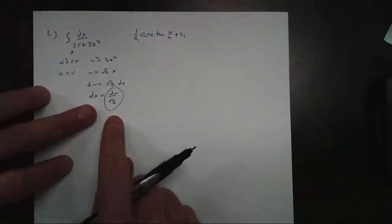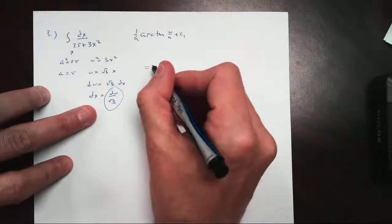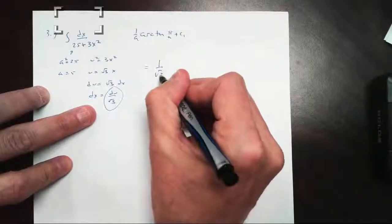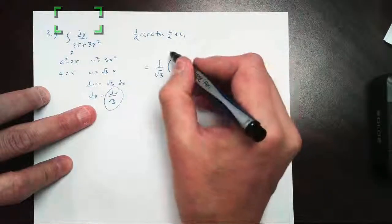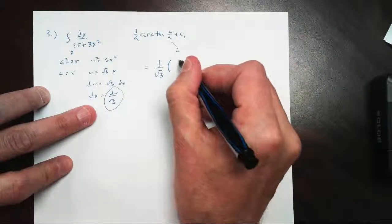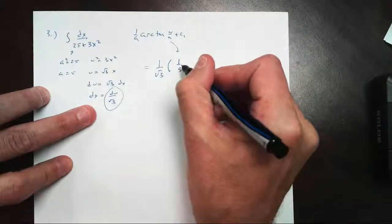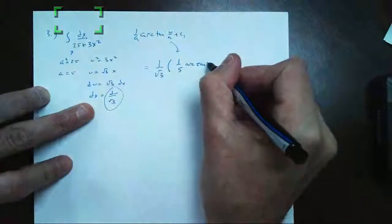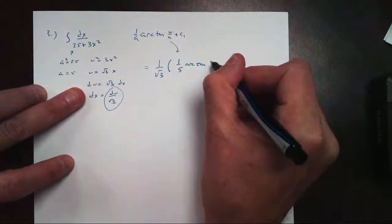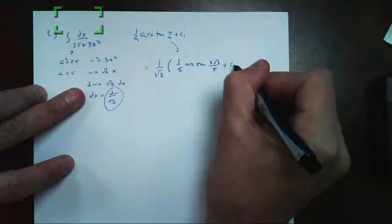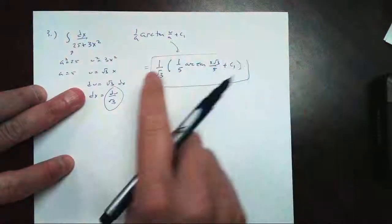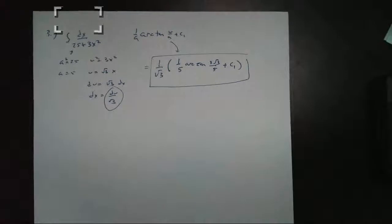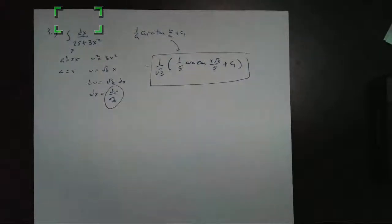I need this over root 3, because what that means is when I write up my final answer, I'm going to get 1 over the square root of 3 times my arc tangent, which is 1 over a, 1 over 5, times the arc tangent of u over a, so x root 3 over 5 plus c. And there's your answer. And you can distribute the 1 over root 3 if you like as well. Easy peasy.